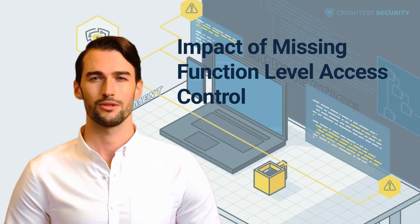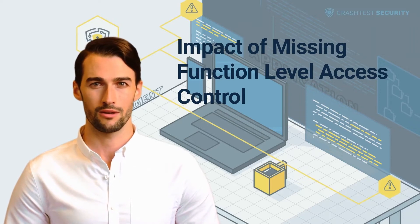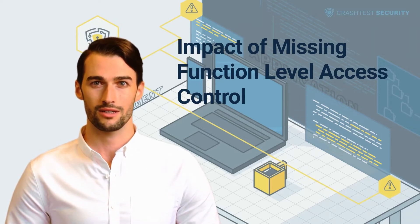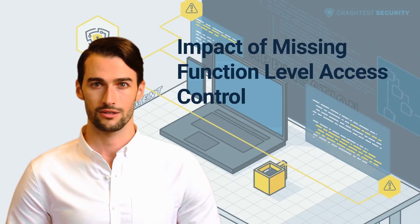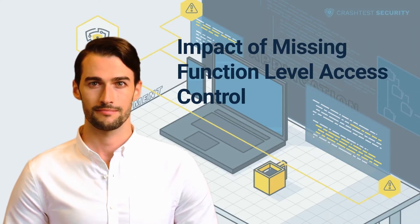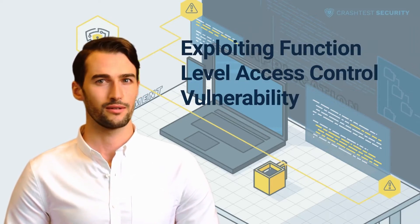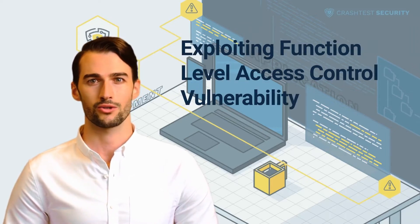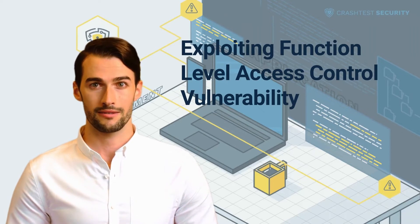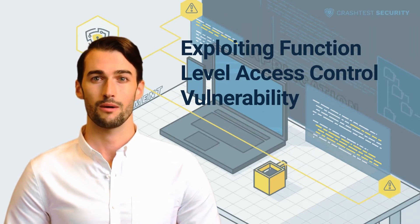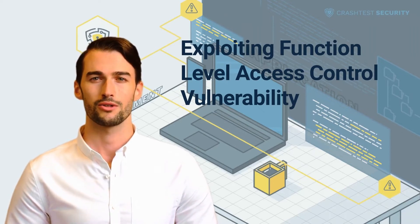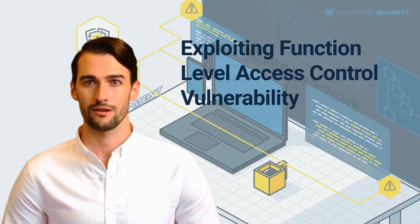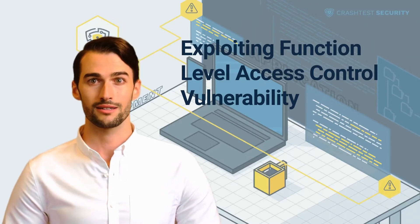As one of the topmost security risks of OWASP Top 10, broken access control is considered one of the major challenges organizations deal with. Here are popular approaches and their respective steps that attackers leverage to exploit missing function-level access control.